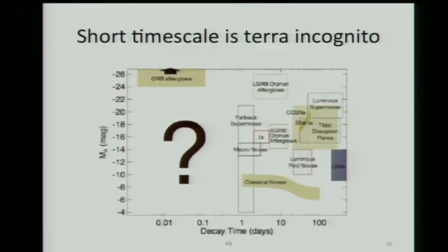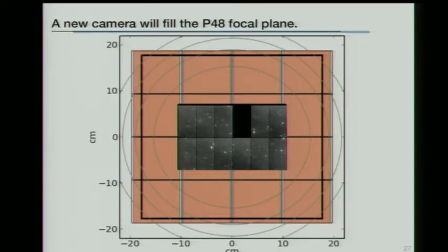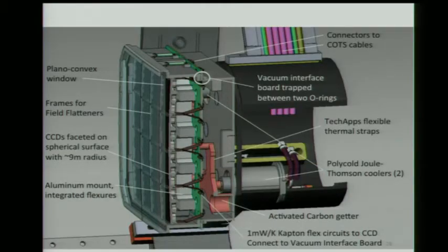ZTF is the automated discovery of the universe with as few humans in the loop as possible. Our main phase space is here, less than a day. This requires high cadence. High cadence also requires either the areal coverage goes down or comes with a larger field of view, which we are now doing. We're building a camera which is 16 of these massive E2V monolithic chips. 47 square degrees. It fills the entire Schmidt plate.